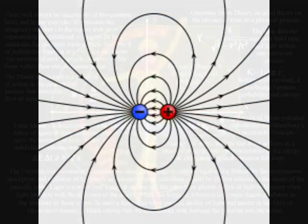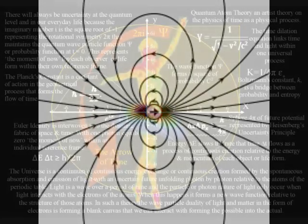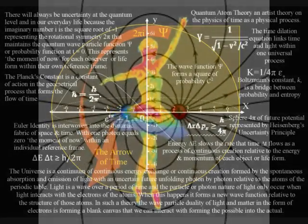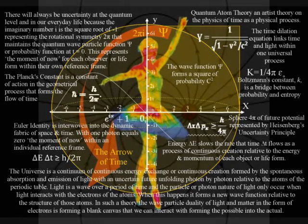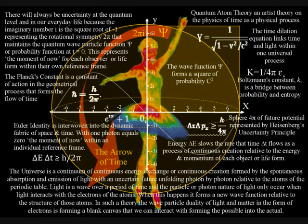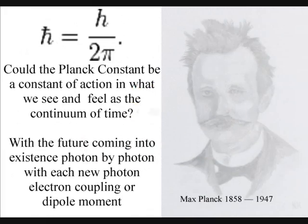We have the imaginary numbers at right angles to the real number line, because electromagnetic fields always interact at right angles to each other. When we multiply by the imaginary numbers, it forms a rotation, with one complete rotation being represented by 2pi. This gives us a geometrical reason why we find 2pi linked to the Planck constant.